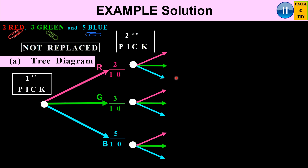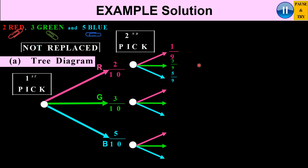Because the sample space has changed, this is now not independent — the second pick depends on what happens on the first pick. If I had two red and already took one, I now only have one red left and haven't replaced it, so it's 1 over 9. I haven't taken a green so I still have three greens but only 9 total, giving 3 over 9. I haven't taken any blue, so that's 5 over 9. The denominator of 10 now becomes 9, and 1 plus 3 plus 5 still gives 9 over 9.